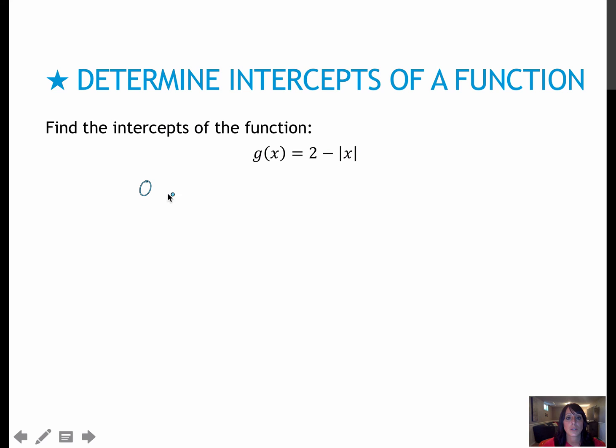For the first, I'm going to replace g of x with 0 and then solve. And for the second, I'm going to replace x with 0 and solve. So over here, where I'm finding my x-intercepts, I would take that minus absolute value of x and add it. So I get the absolute value of x equals 2.